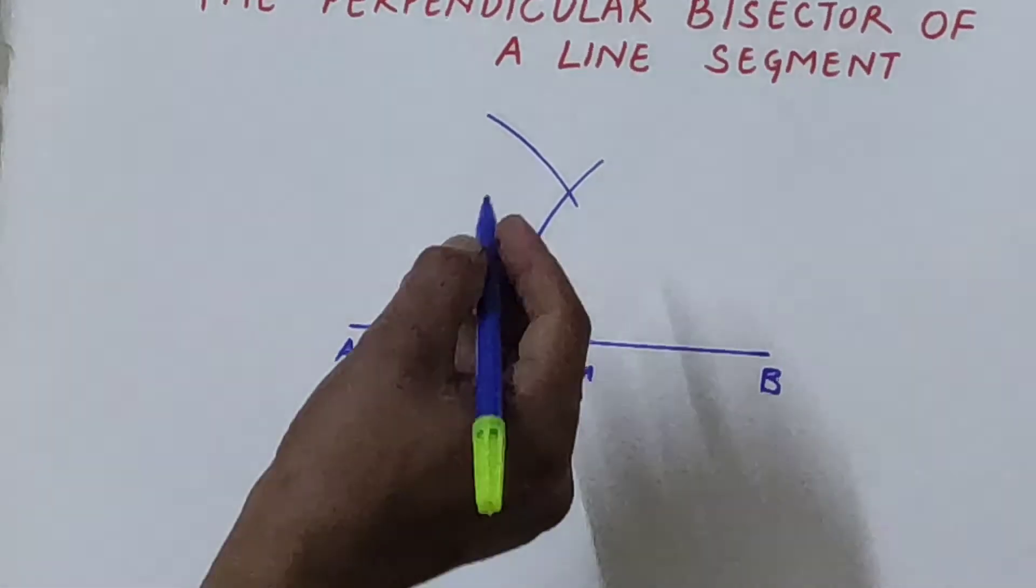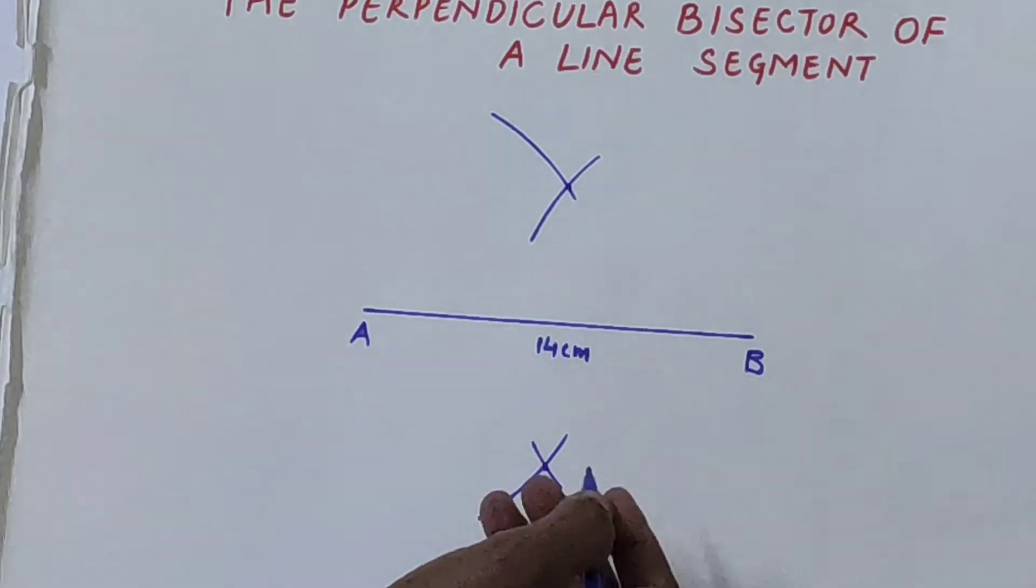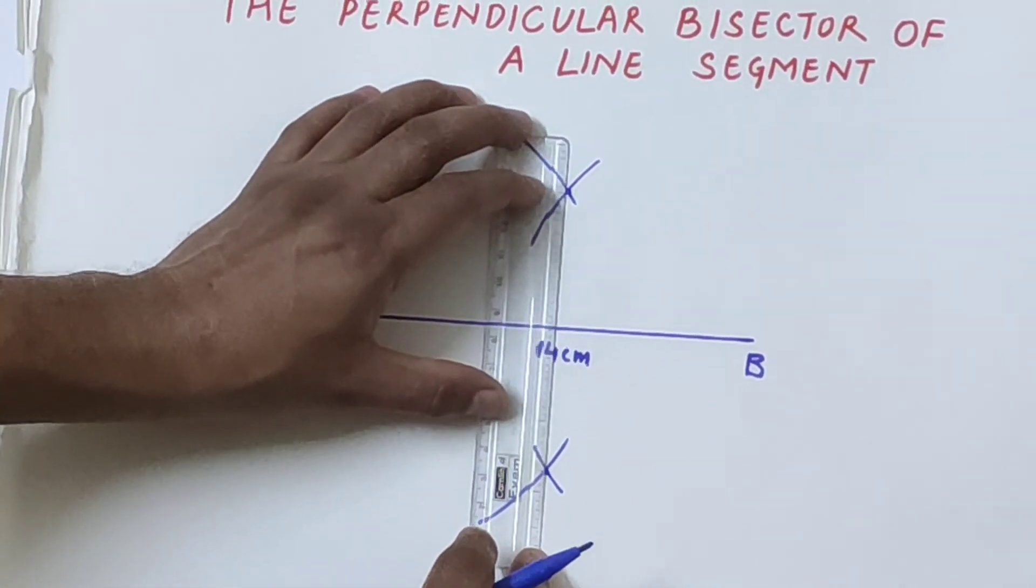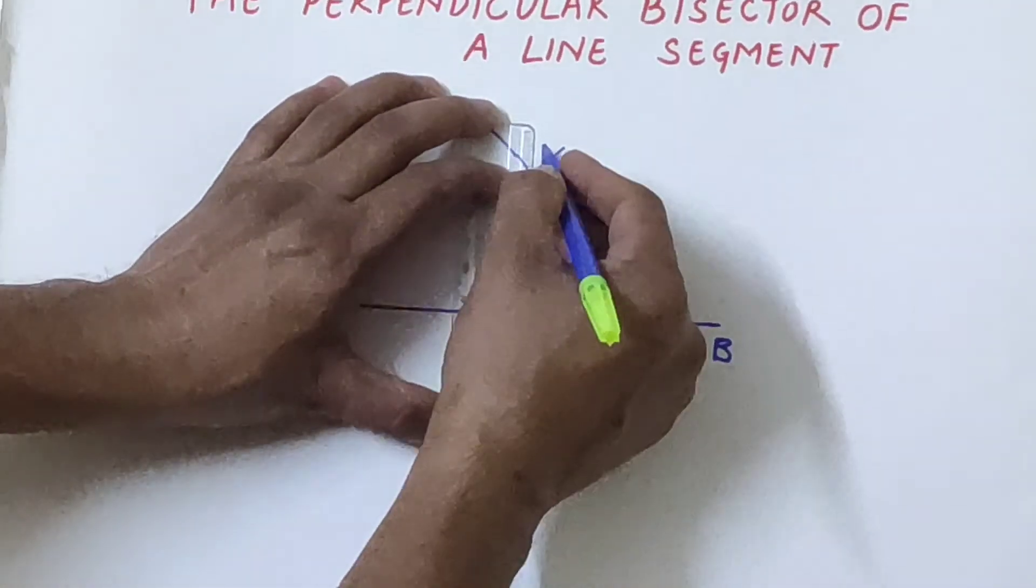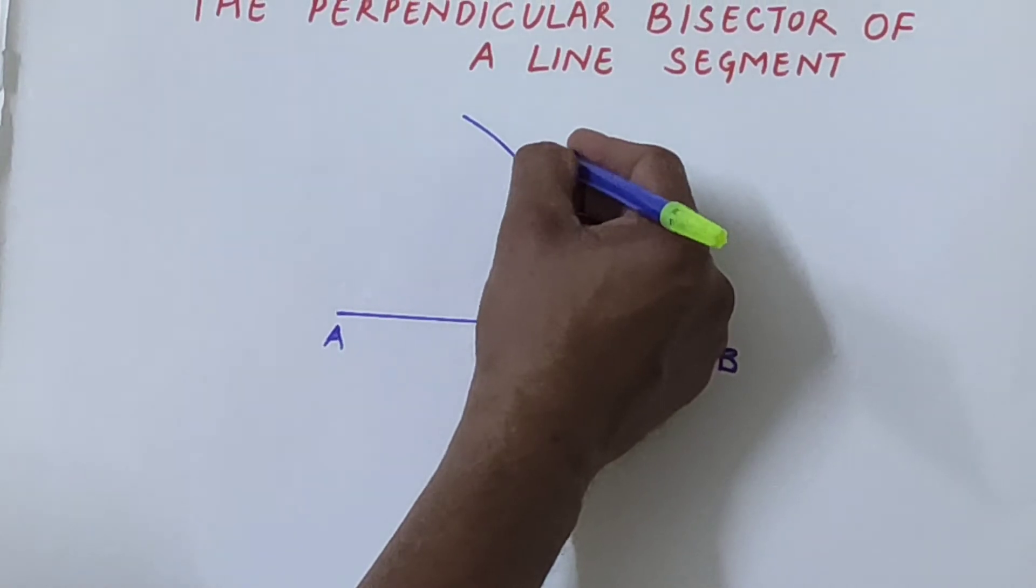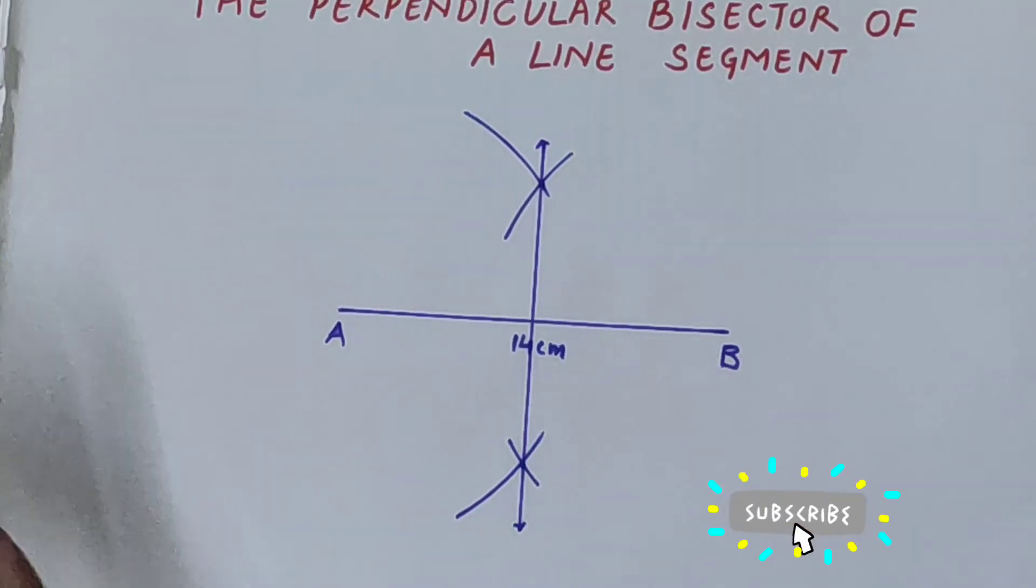Now we will join this point and this point with the help of the ruler to get the bisector of this segment. You can see that this line is the bisector of AB.